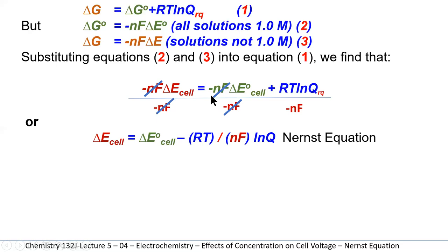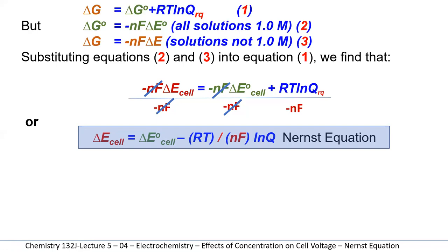Delta E of a cell equals delta E under standard conditions of the cell — E-naught of the cell — minus RT divided by NF. It's a minus because of the minus NF in the denominator, all multiplied by the ln of Q. This famous equation is called the Nernst equation and it's very useful. Electrochemists can use voltages of cells to actually figure out concentrations of unknown solutions, so it has a practical application that's widely used.